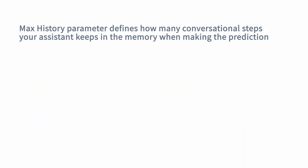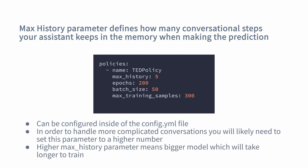There are quite a lot of different parameters you can configure for dialogue management policies — check out the Rasa documentation to learn more. One of the most important parameters to highlight is max history. The max history parameter allows you to define how many steps your assistant keeps in memory when making predictions for the next action. If you would like your assistant to handle longer and more complicated conversations, you will likely need to tune and increase this value. But be mindful: the higher the value of max history, the larger and more complicated your dialogue management model gets, which takes longer to train.